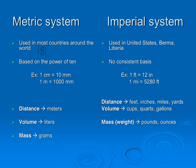The imperial system, we have one foot equals 12 inches. We have one mile equals 5,280 feet. We have one mile equals 1,760 yards. There's no consistency there.